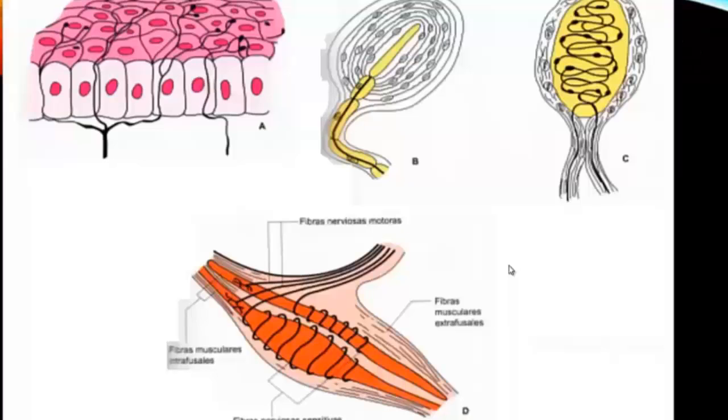The nerve stimulus is captured by specialized organs that are distributed throughout the organism. These organs are encapsulated or free receptors that are found in the muscles, joints, bones, viscera, and skin.